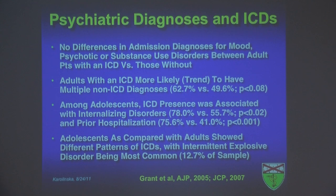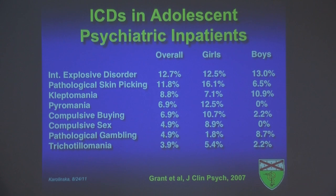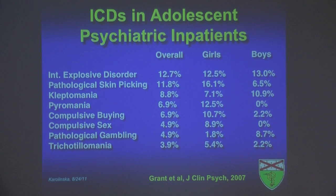The adolescents, as compared to the adults, had a different pattern of impulse control disorders, with intermittent explosive disorder being the most frequently identified — shown here for the overall adolescent sample broken down by gender. We found no statistically significant difference between boys and girls in the frequencies of impulse control disorders overall. However, to our surprise, pyromania and compulsive sexual behaviors were more frequently identified in girls compared with boys. Whether this reflects the nature of the hospitalized adolescent sample versus what is found in the community warrants additional study.